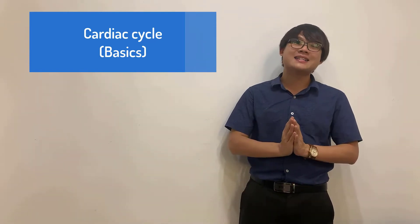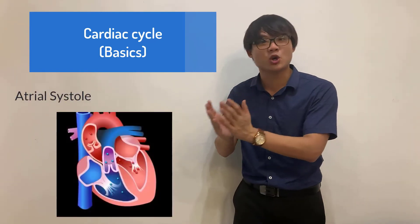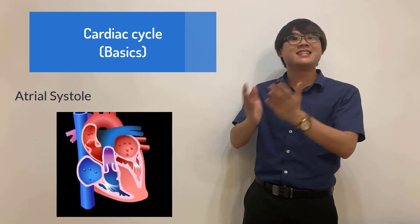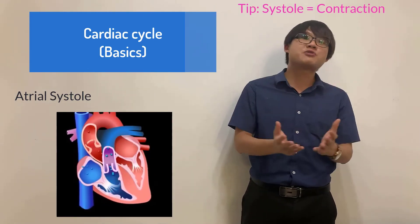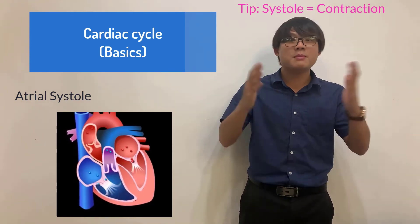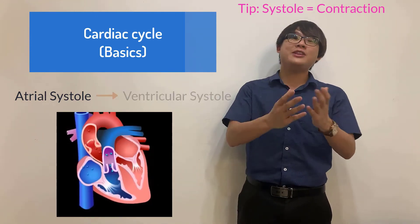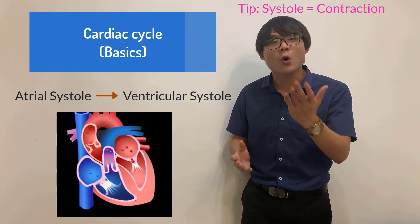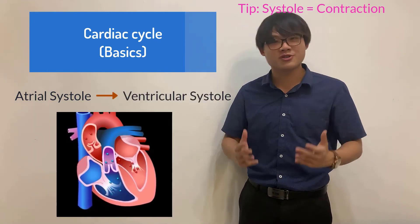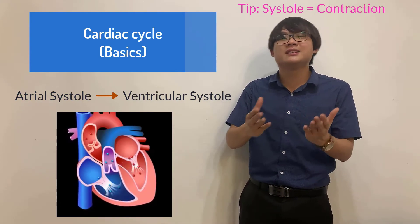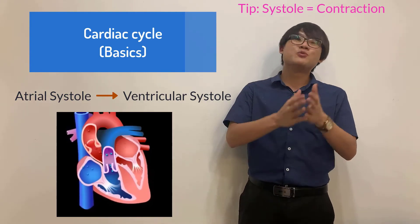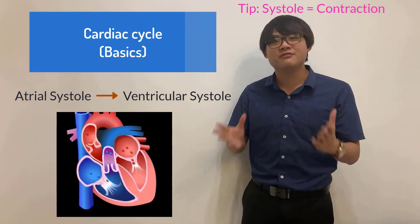we have what we call as the atrial systole. The word systole actually means contraction. Atrial systole means contraction of the atria simultaneously and followed by ventricular systole or the contraction of ventricles. In higher level later, we will study about ventricular diastole, which means the relaxation of the ventricles.